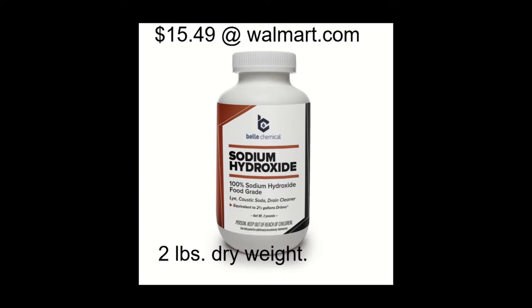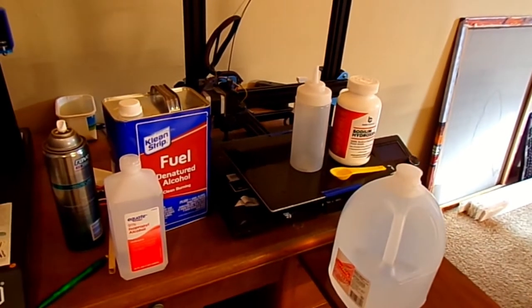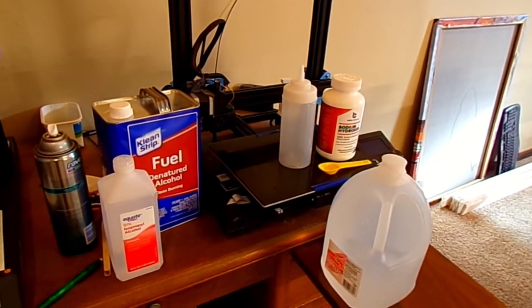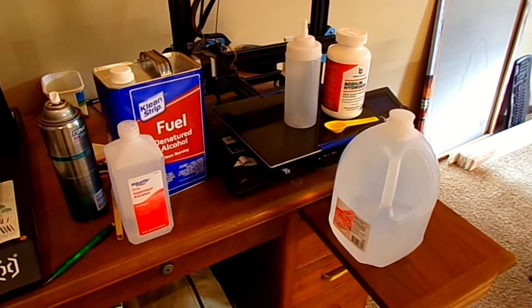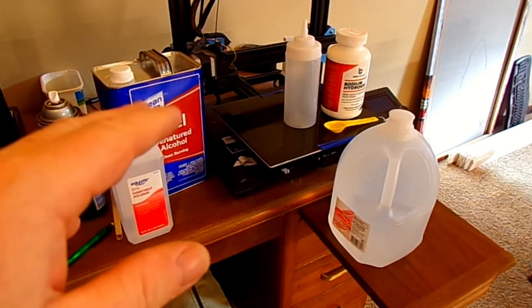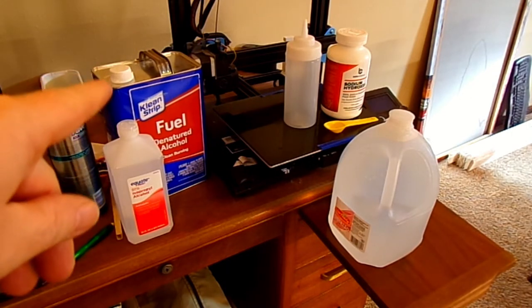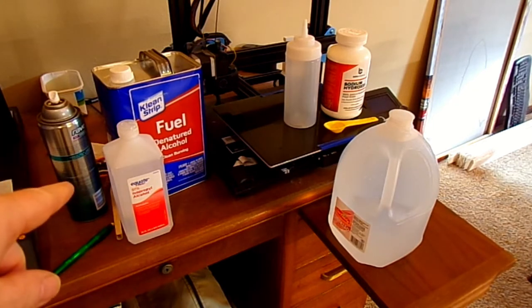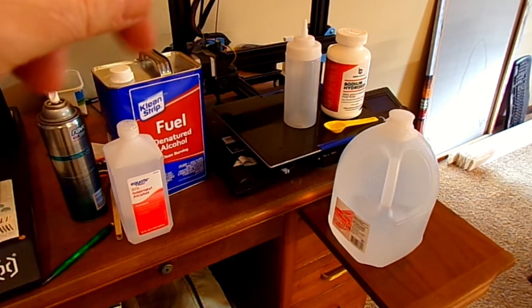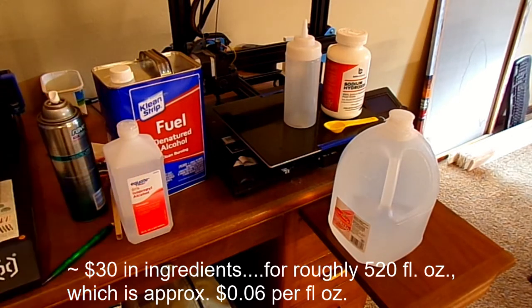I got on the internet and read for hours about people's opinions on what to make for CA accelerator. A lot of people were just like, oh screw it, just go spend the 20 bucks on another bottle. That's all good, but what if this works? The denatured alcohol was about 12 dollars, a buck for the isopropyl alcohol, eight or nine dollars for the sodium hydroxide, and distilled water is less than a buck a gallon.